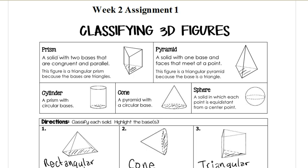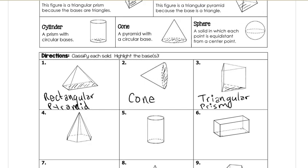As you can see here, this is a prism, a pyramid, cylinder, cone, and sphere. This is how you write them. So, directions. Classify each solid, height of the bases.